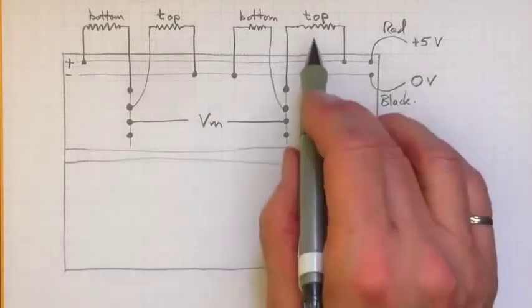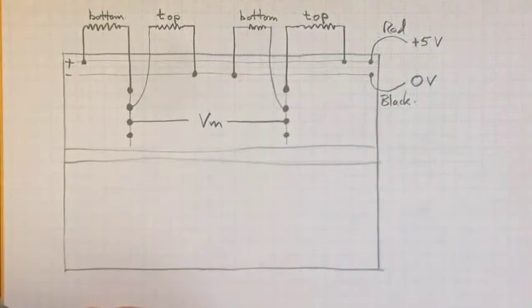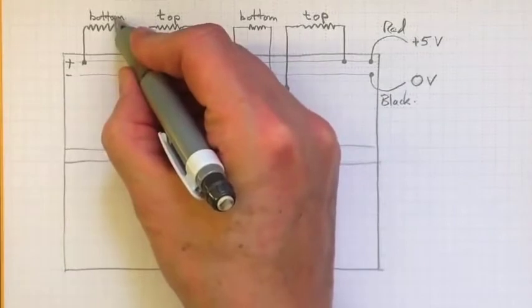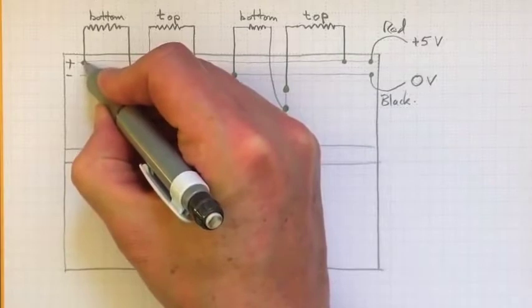Then I need to connect up each of the individual gauges to form my Wheatstone bridge. Remember, I want to connect a bottom gauge, one of the ones on the bottom that are going to get compressed and have their resistance go down, to plus 5 volts.